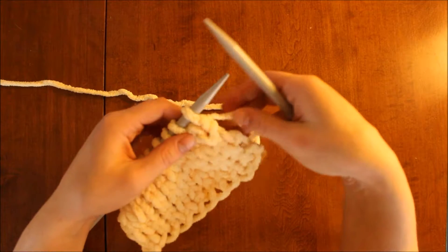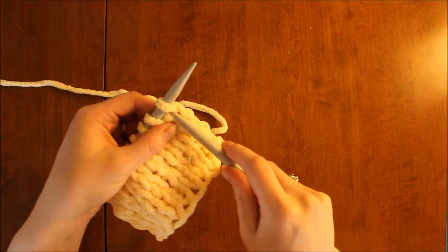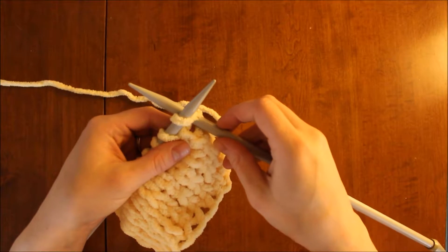When a pattern tells you to do something knitwise, it means inserting your second needle from the front to the back of a stitch.